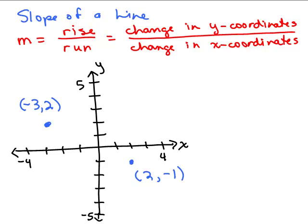We're continuing our study of the slope of a line. We've been talking about the slope as the rise over the run, but it also means it's the change in the y coordinates, which tells you what the rise is, over the change in the x coordinates, which tells you what the run is.